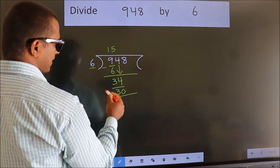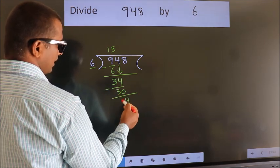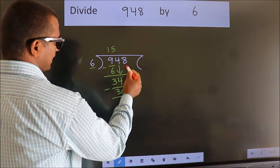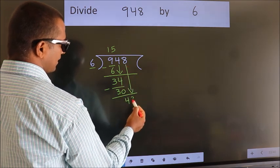Now, we subtract. We get 4. After this, bring down the beside number. So, 8 down.